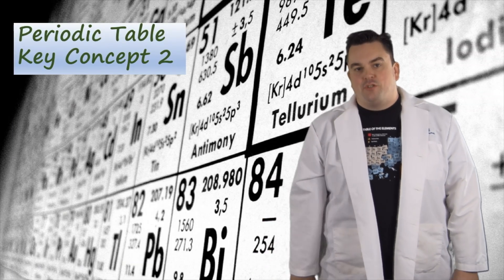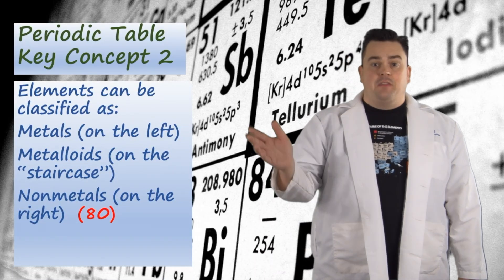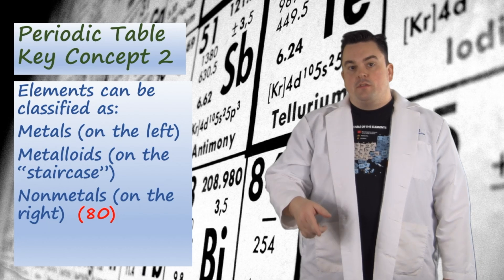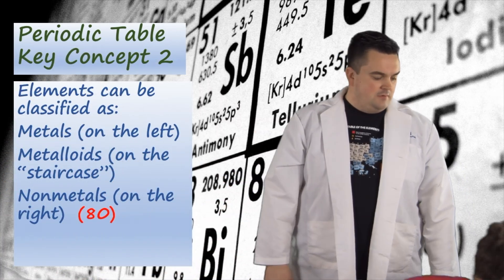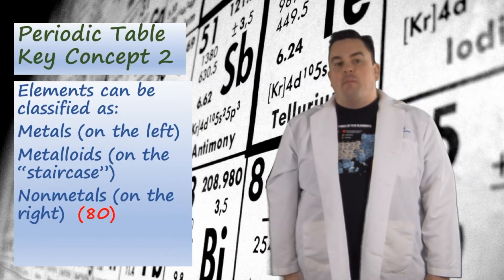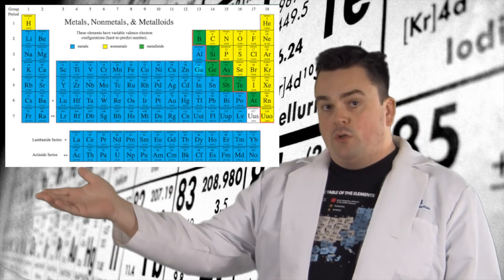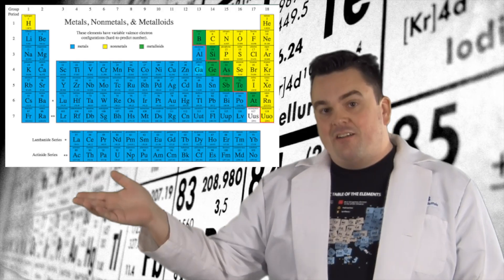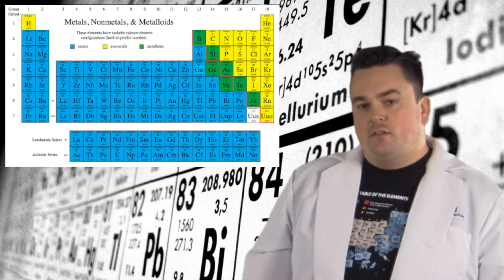Periodic Table Key Concept 2. Elements can be classified as metals on the left, metalloids on the staircase, watch out for polonium, and nonmetals on the right. Now, as you can see in our example, the elements that are considered metals are in blue. The elements on the staircase are in green. And the nonmetals, including hydrogen, are in yellow.